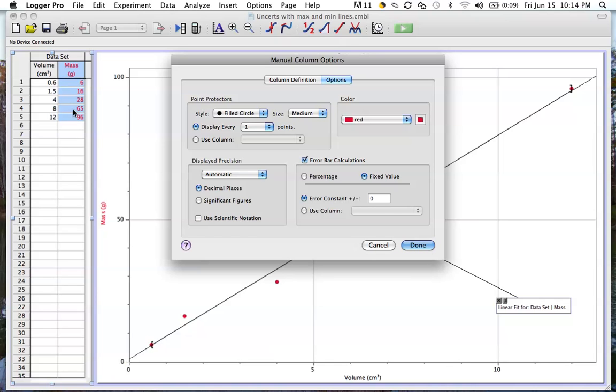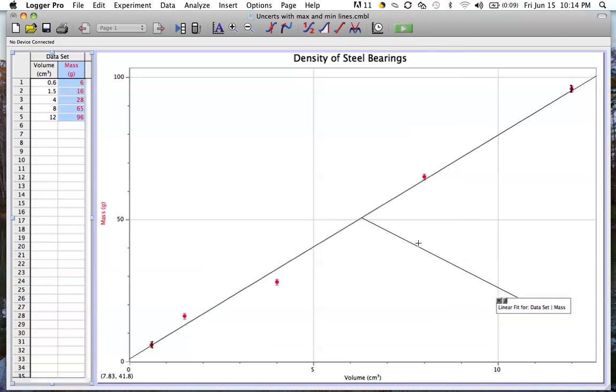Since we use the same instrument for measuring each of these values of the mass, we'll be using a fixed value and we'll just say that our uncertainty was plus or minus one gram. As we click done, you can see that the uncertainty bars have shown for each of those data points.